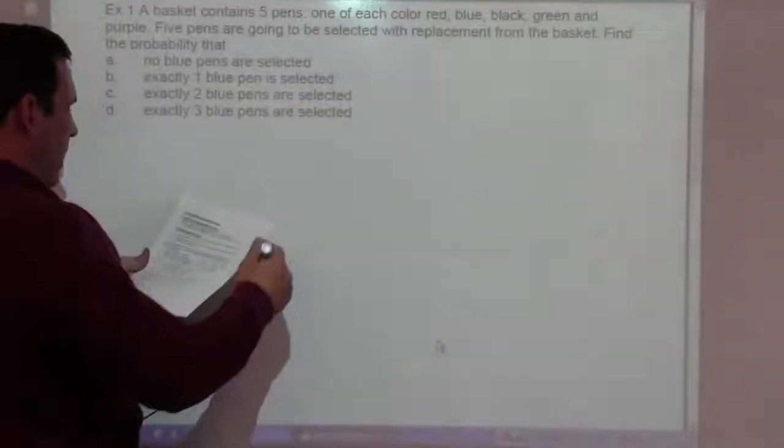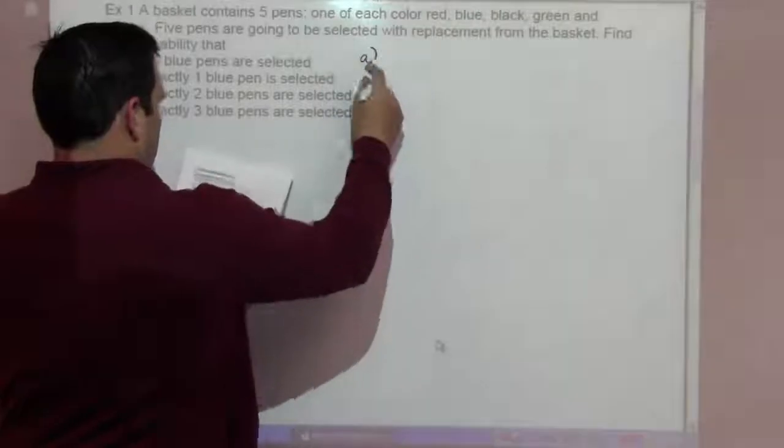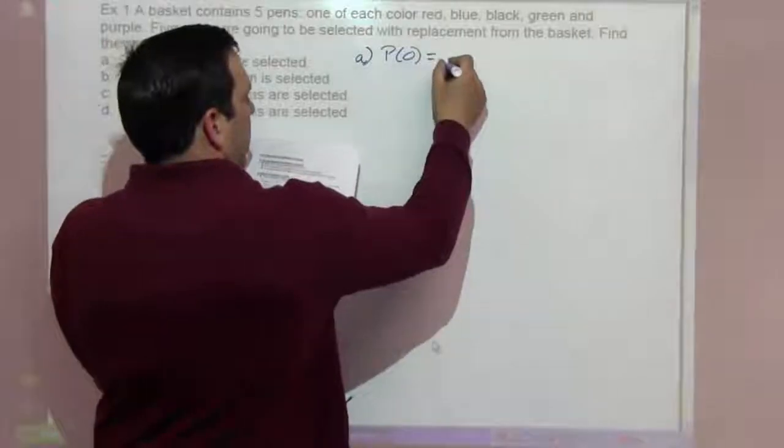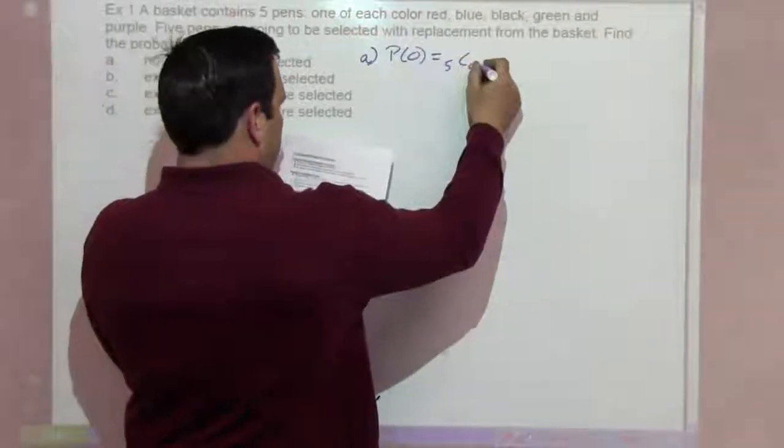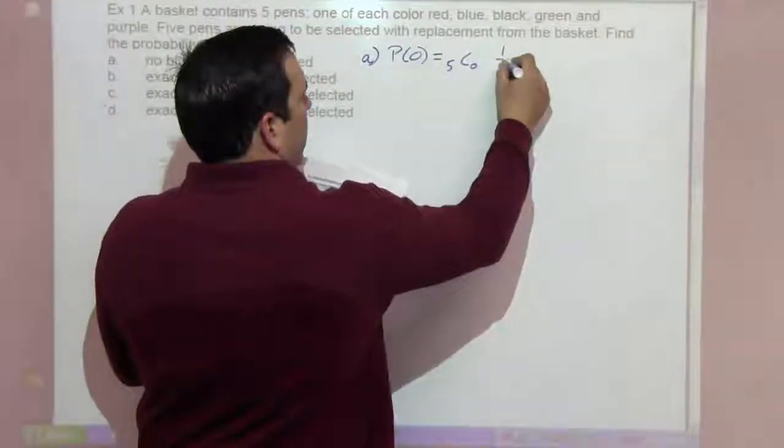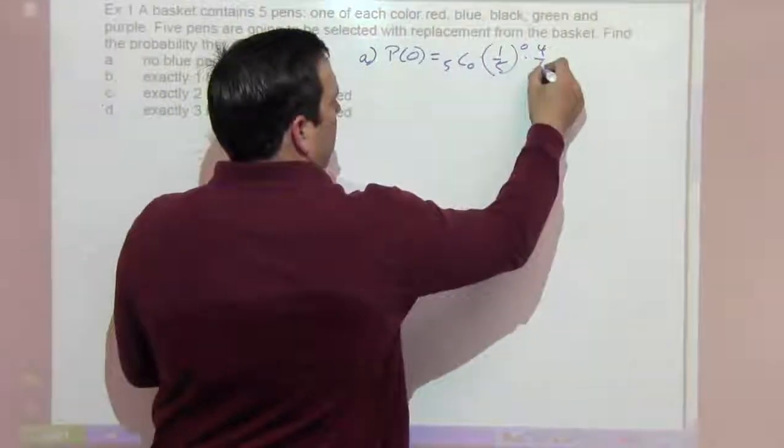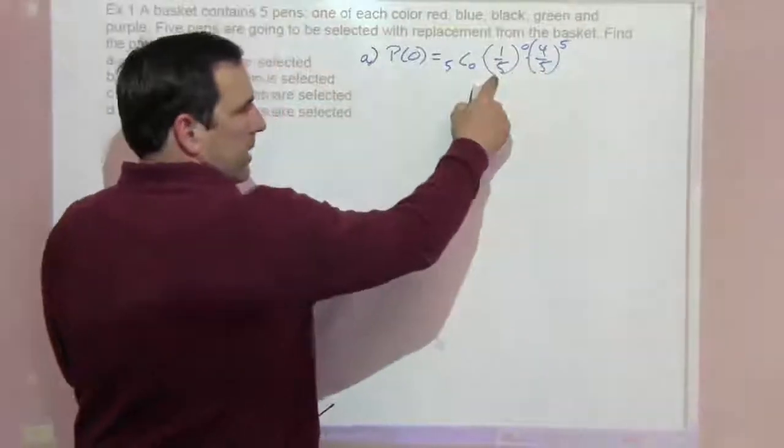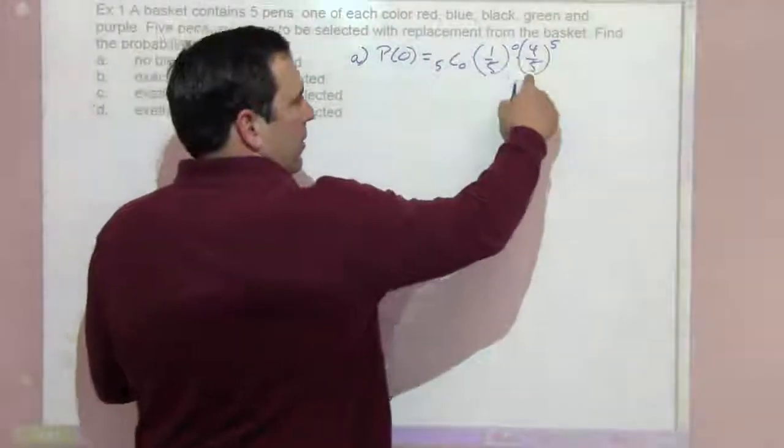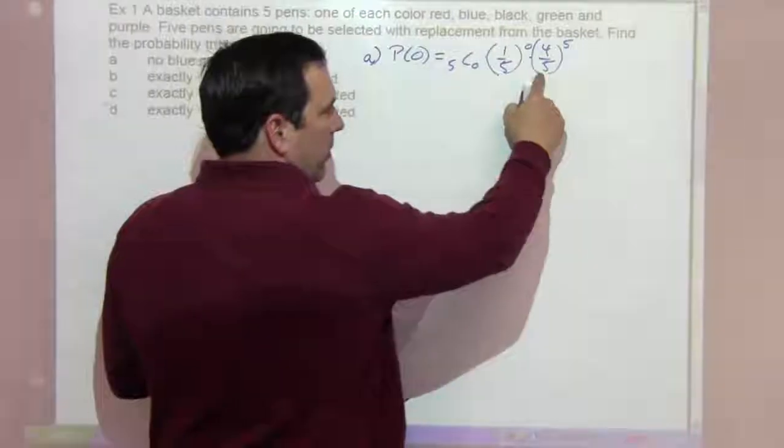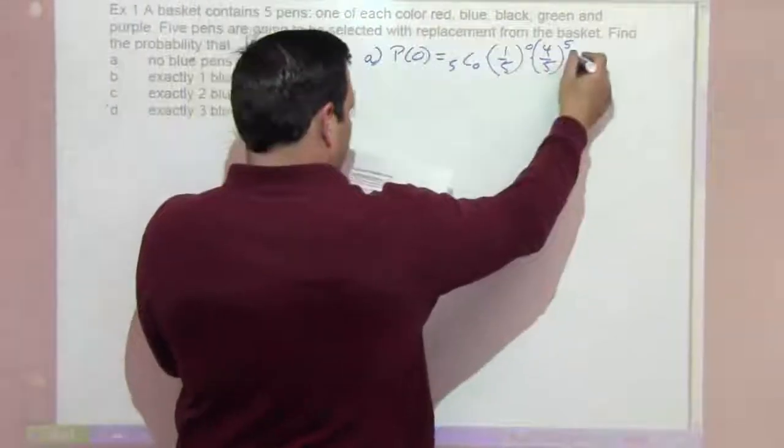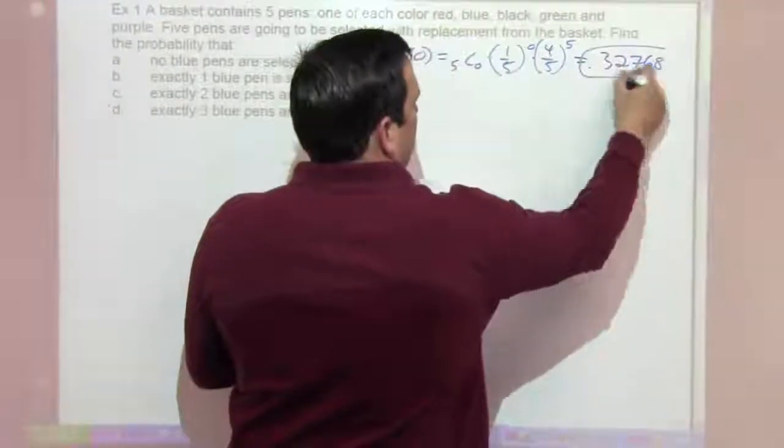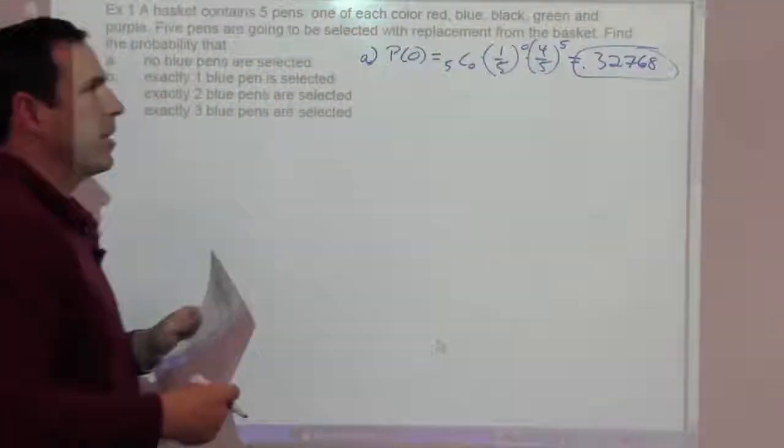For part A, the probability of zero blue pens is five choose zero times one-fifth to the zero times four-fifths to the five power. Success is one-fifth, failure is four-fifths. Getting the blue pen is one-fifth, not getting blue is four-fifths. From that we get .32768. So if you're going to do it five times, you're unlikely to never get a blue.